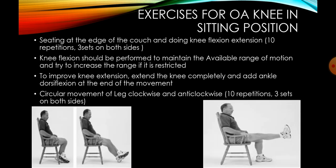Exercises for OA knee in sitting position: sitting at the edge of the couch and doing knee flexion and extension. Knee flexion should be performed to maintain the available range of motion and try to increase the range if it is restricted. As shown on the left side picture, patient can be seated on the chair and do knee flexion exercises. To improve knee extension, extend the knee completely and add ankle dorsiflexion at the end of the movement. Ask the patient to extend the knee joint and at the end of range of motion, do ankle dorsiflexion. Circular movement of the leg can also be done clockwise as well as anticlockwise.